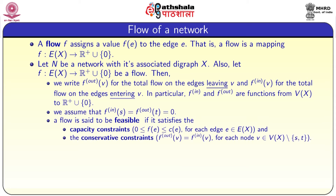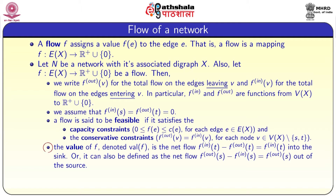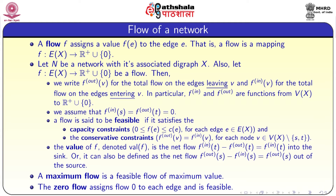The conservation constraint requires f-out(v) equals f-in(v) for each node excluding the source and sink. The value of the flow, denoted val(f), is the net flow: f-in(t) minus f-out(t), which equals f-in(t) into the sink, and can also be defined as f-out(s) minus f-in(s), which equals f-out(s) from the source. A maximum flow is a feasible flow of maximum value. A zero flow assigns flow 0 to each edge and it is feasible.